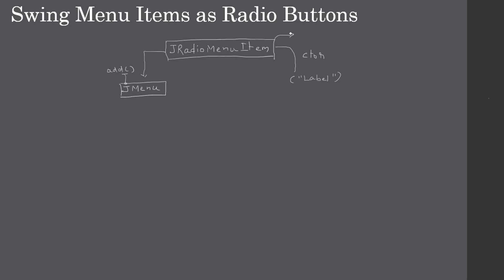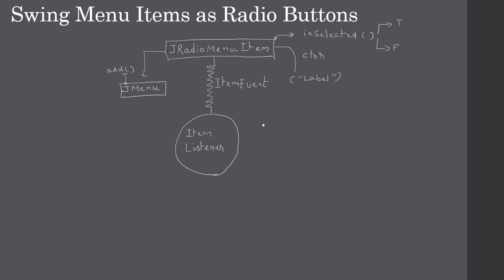The JRadioMenuItem exposes a method called isSelected. When you call this method it will return either true or false: true means the radio button is actually selected by the user and is in a checked state, and false means it is not selected. The JRadioMenuItem will produce an ItemEvent which can be received by an ItemListener.